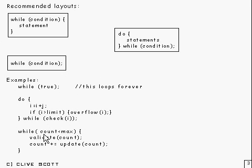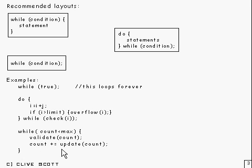Here's something else: if count is less than max, go around here and update this count at some point, and then go and test it again. These are pretty typical sorts of things you get with for loops and while loops — except for that first one of course, which just locks the machine up.